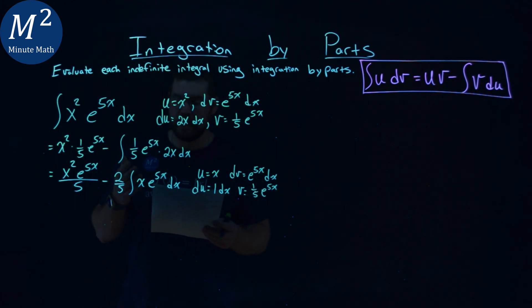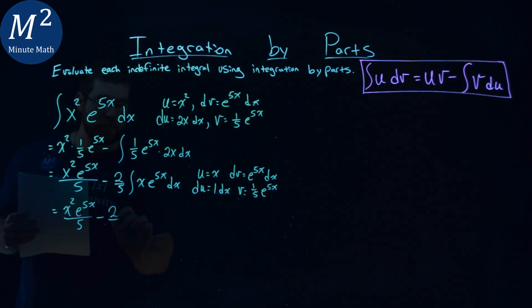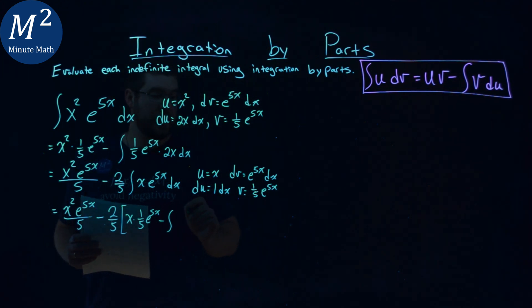From there, let's apply integration by parts a second time. This part stays the same: x squared e to the 5x over 5, minus - the two-fifths stays out here, but we're multiplying that by the integration by parts formula. u times v: in this case x times my v value, one-fifth e to the 5x power, minus the integral of v, one-fifth e to the 5x power, times our du, which is just 1 dx.